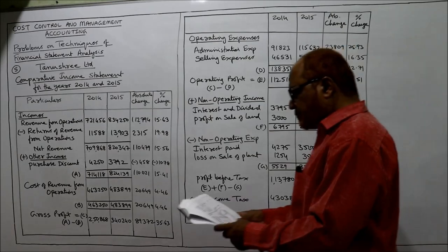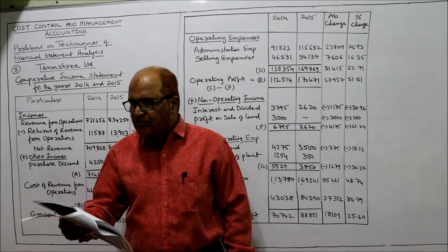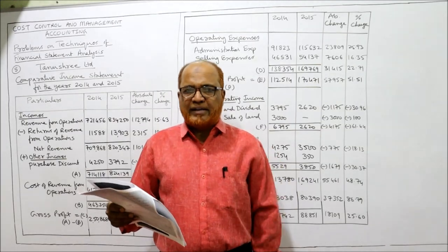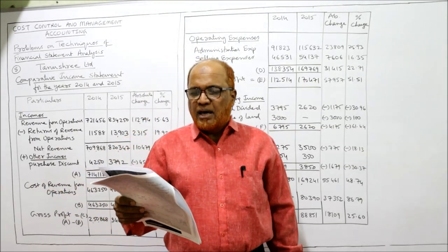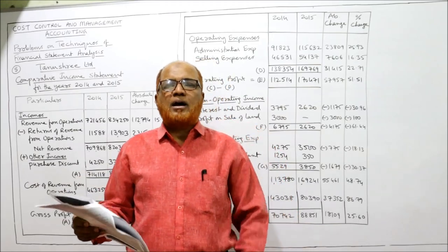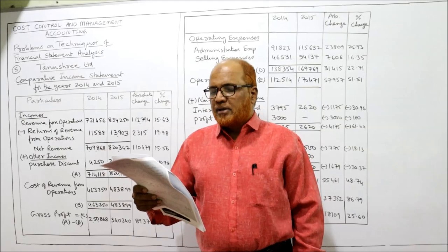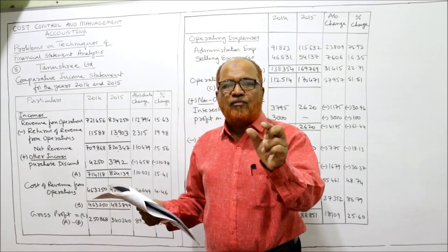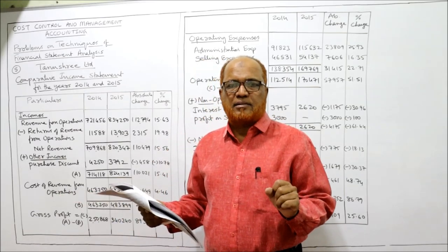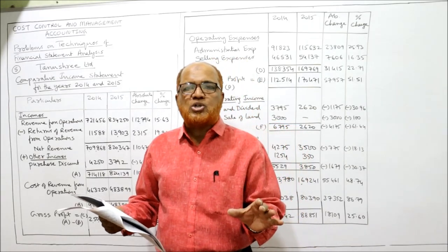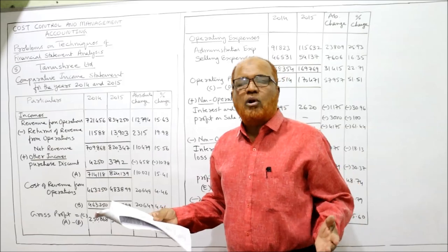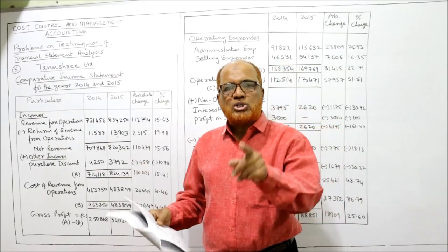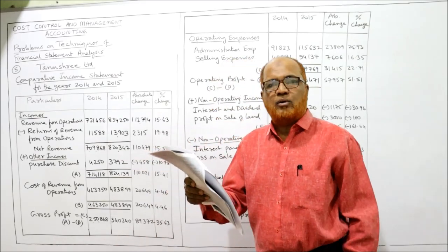Now see the fifth problem. The following is the statement of profit and loss of Tanushree Limited for the year 2015 and its previous year, 2014-2015. Two years data is given. Revenue from operations — that means we have to make a comparative income statement. Revenue from operations are sales, and return of revenue from operations are sales returns. So from revenue from operations we subtract return from revenue from operation.